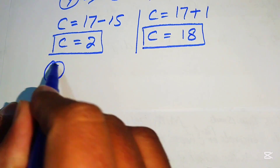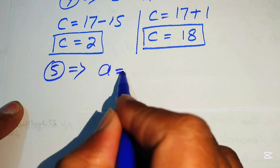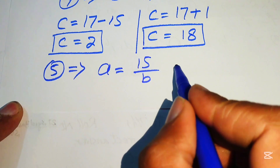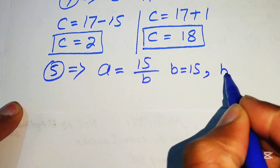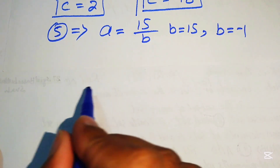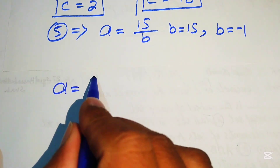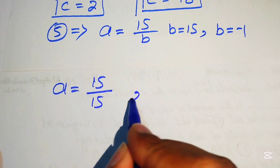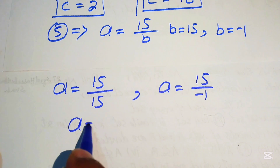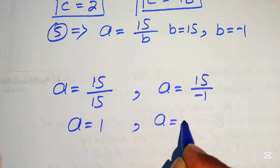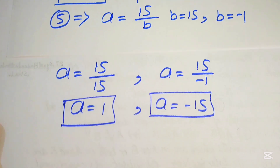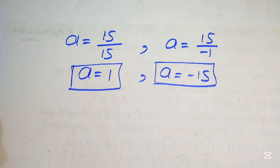To find A, we use equation 5: A equals 15 over B. Substituting B equals 15 gives A equals 1. Substituting B equals minus 1 gives A equals 15 over minus 1, so A equals minus 15. These are the two values of A.